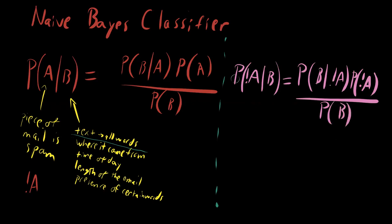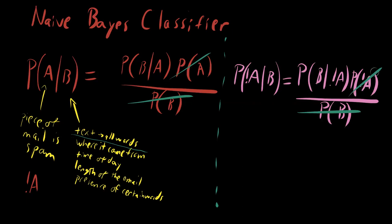This is great, because if this is the probability that a piece of mail is not spam given our evidence, and this is the probability that it is spam given our evidence, we're dividing by the probability of B in both cases — so we can just get rid of it, since it's the same term in both. Now we just have the probability of B conditioned on A and the probability of A or not A. In the case where half the emails are spam and half are legitimate, the priors are equal and you can cancel them out of your calculation.